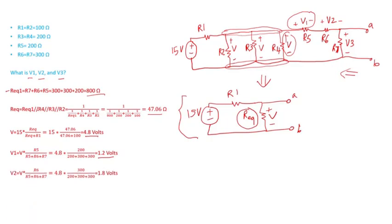I did the same thing for V2: it's V times R6 divided by the sum of the resistances in series, so I get 1.8 volts. I do the same thing for V3: V times R7 divided by R5 plus R6 plus R7. If I plug in the numbers, I get 1.8 volts.